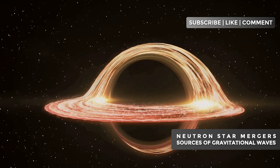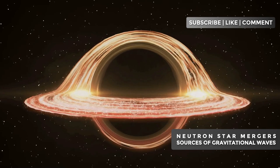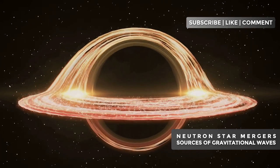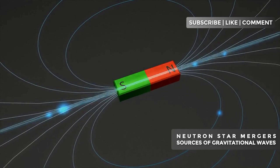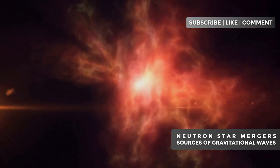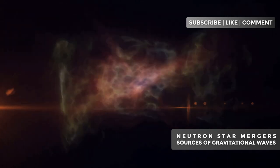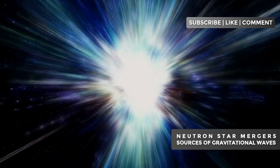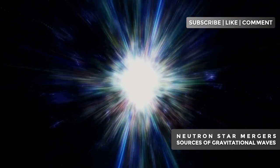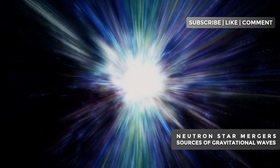Neutron stars are true prodigies of nature, spinning hundreds of times per second and generating magnetic fields trillions of times stronger than Earth's. To put this into context, imagine a common refrigerator magnet. Now, multiply its strength by a trillion and concentrate it in a sphere the size of a city. That's the magnetic power of a neutron star. This colossal force has fascinating consequences, such as creating particle jets that extend for light years into space.